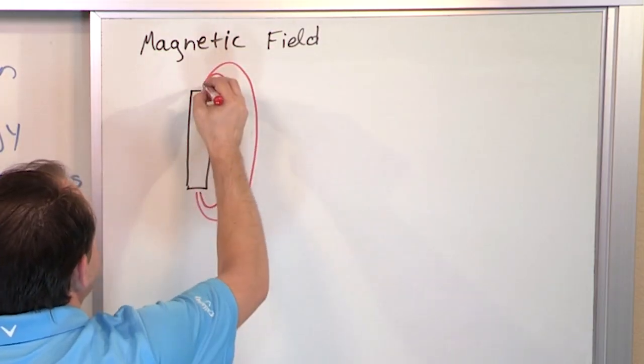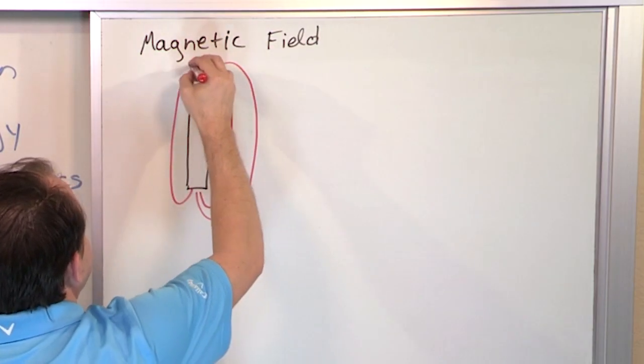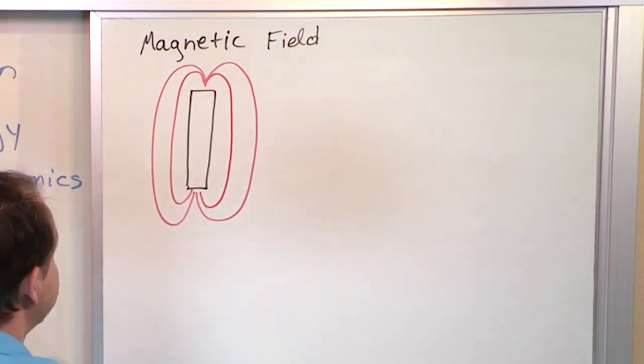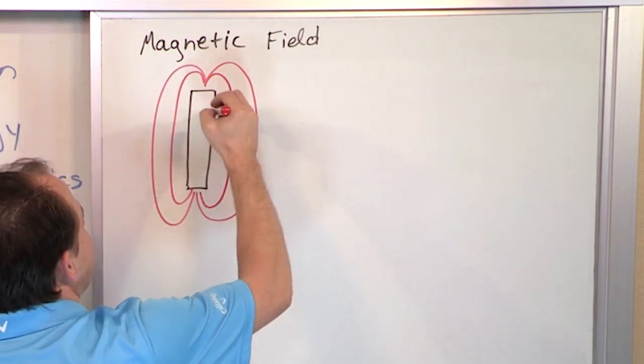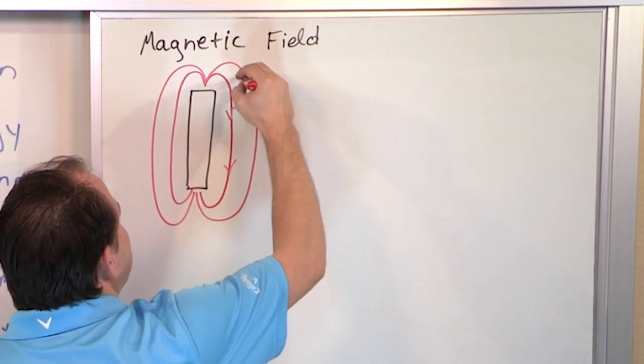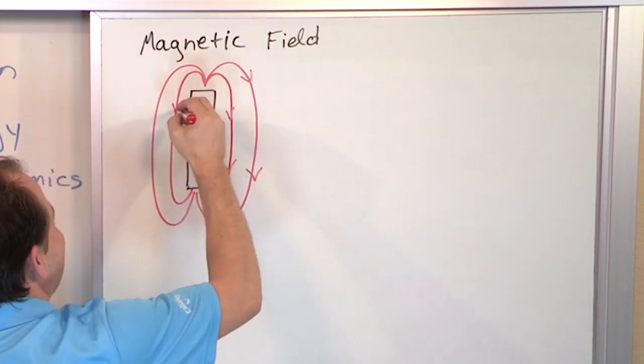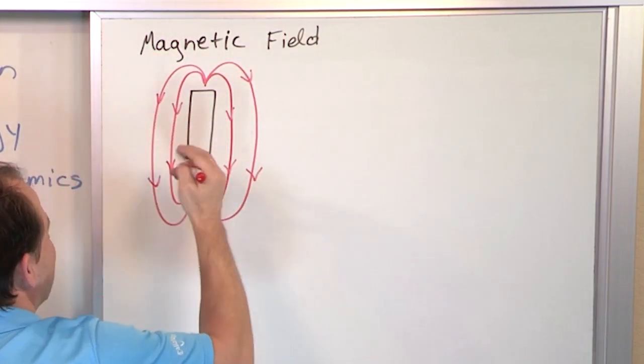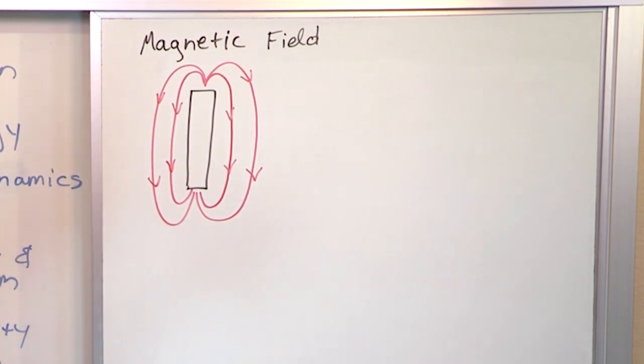We can't see it. We can't really touch it. But we know it's there because it can influence the environment. So this has what we call magnetic field lines, which are kind of invisible lines of force, you can think of it that way, that surround this guy.